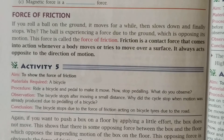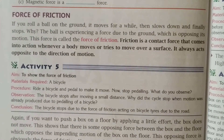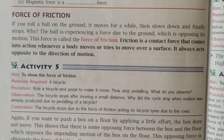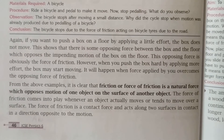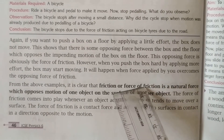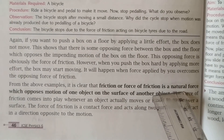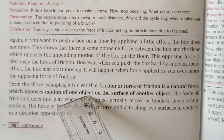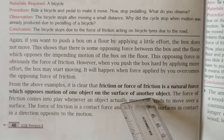Even if we do not apply the brake, the cycle can still be brought to rest. If we paddle initially and then stop paddling, the speed gets slower and gradually the cycle comes to rest. This happens because frictional force is applied between the tyre and the road. So we can conclude that friction is a natural force which opposes the motion of one object on the surface of another object.